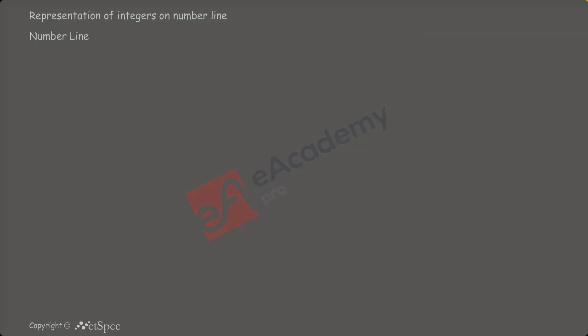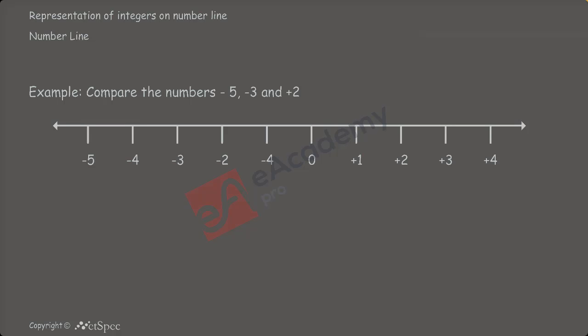Let us take another example in which we would compare three numbers. The question is: compare the numbers minus 5, minus 3, and plus 2. Here, we are going to compare three integers. To solve this question, we shall again make a number line. Let us draw the number line. Mark the number zero in the middle and the other numbers to be compared — that is, minus 5, minus 3, and plus 2 — on their respective positions.